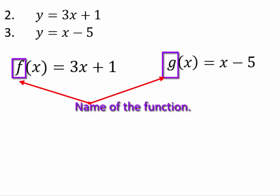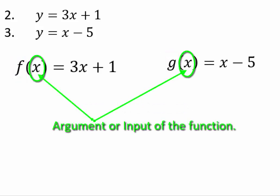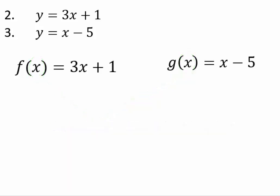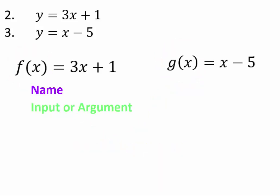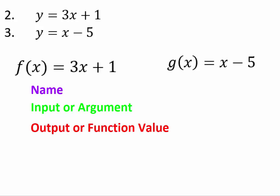A function has three components. The small letters f and g are the name of the function — you can also use capital letters or actual names. The second component is the input, or the x — the argument of the function. And then the whole thing, f of x or g of x, is the output or function value. So again, a function has three components: name, argument, and output or function value.